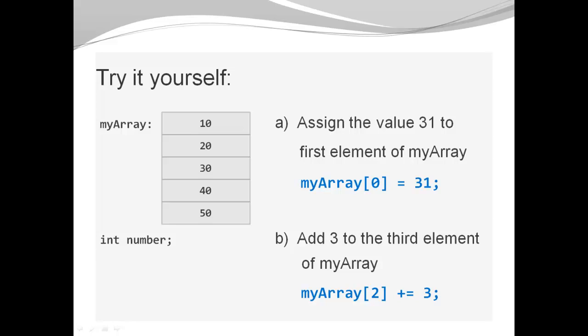A solution for challenge A is: myArray[0] = 31. We are modifying the element value at index 0, which is the first element. A solution for challenge B is: myArray[2] += 3. We're using the compound operator because we have to read the element first, change it by adding 3, and reassign the new updated value to the same position.